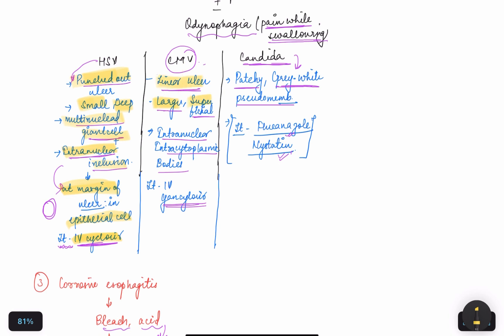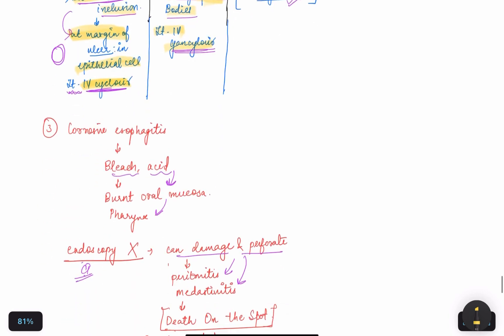It is present in the larger and superficial layer and it is intranuclear and intracytoplasmic bodies. The treatment is IV ganciclovir. We have candida, which is patchy gray-white appearance, pseudomembranous, and the treatment is fluconazole and nystatin.